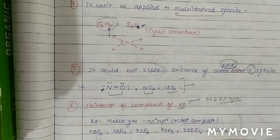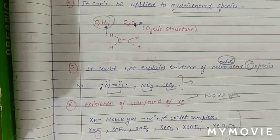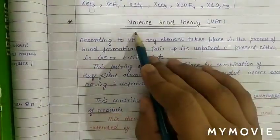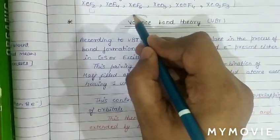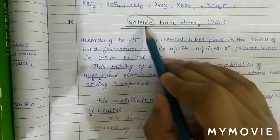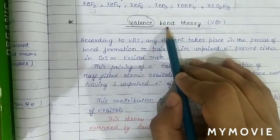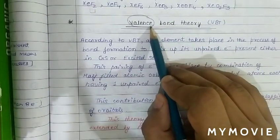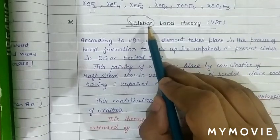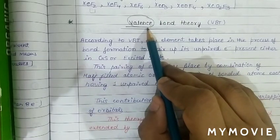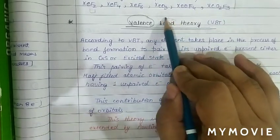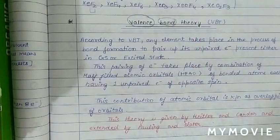Having completed the discussion of Lewis dot structure, we now move towards Valence Bond Theory for the formation of covalent compounds. According to Valence Bond Theory, the valence shell of an atom will make bonds — the valence shell orbitals must have unpaired electrons which will form bonds.